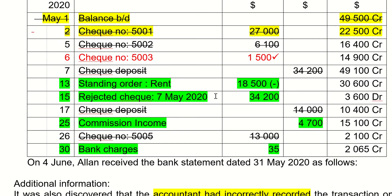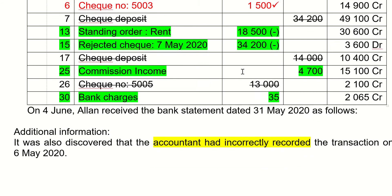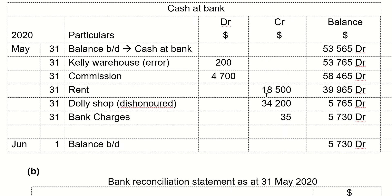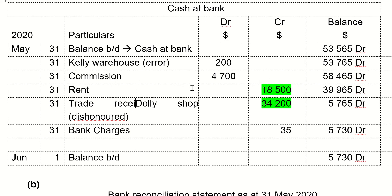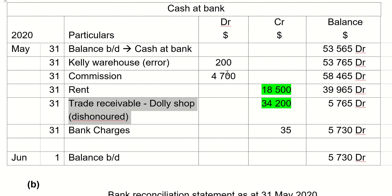What likely happened is that Dolly Shop tried to pay you, you banked the money, but either there was something wrong with the check or Dolly Shop didn't have enough funds. The bank has taken the amount back out. So you record this as a minus in your cash at bank account. For Jolly Shop, you should note that they are a trade receivable, so you write something like 'trade receivable — Jolly Shop dishonored' to show it is a dishonored check.